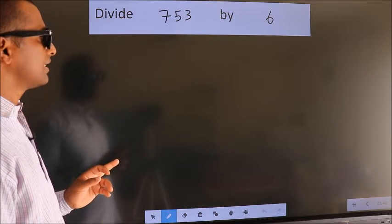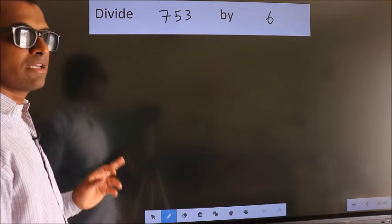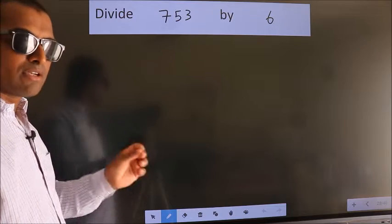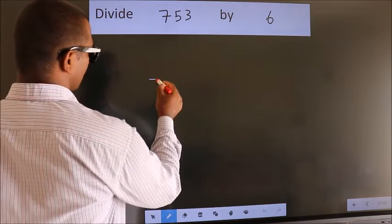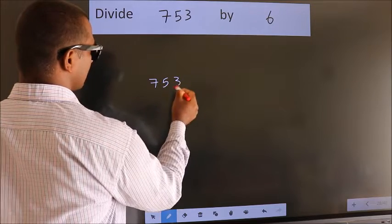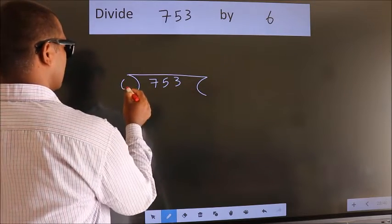Divide 753 by 6. To do this division, we should frame it in this way. 753 here, 6 here.